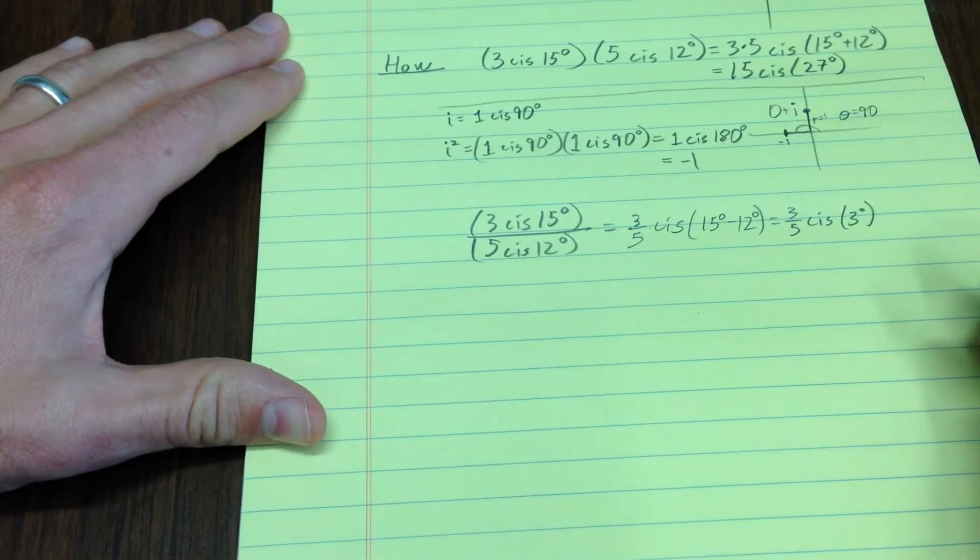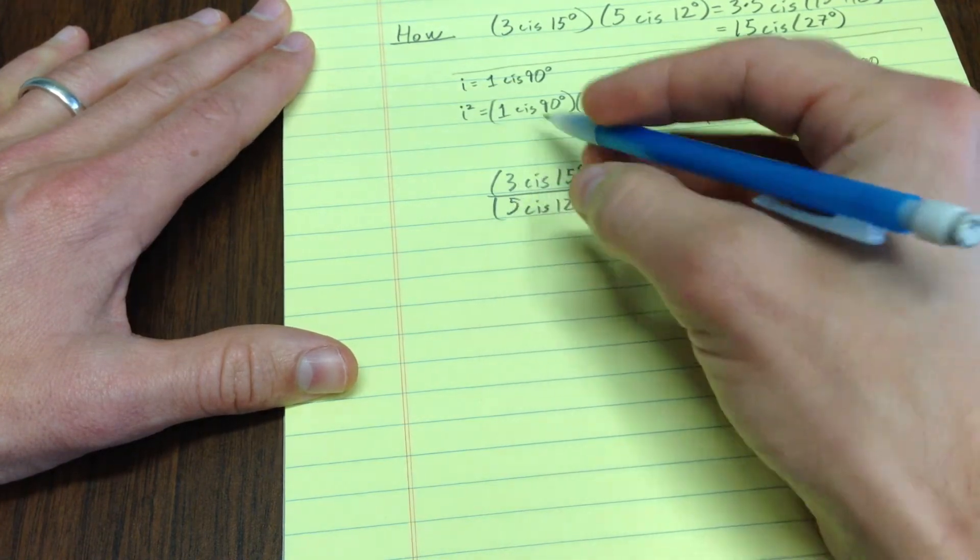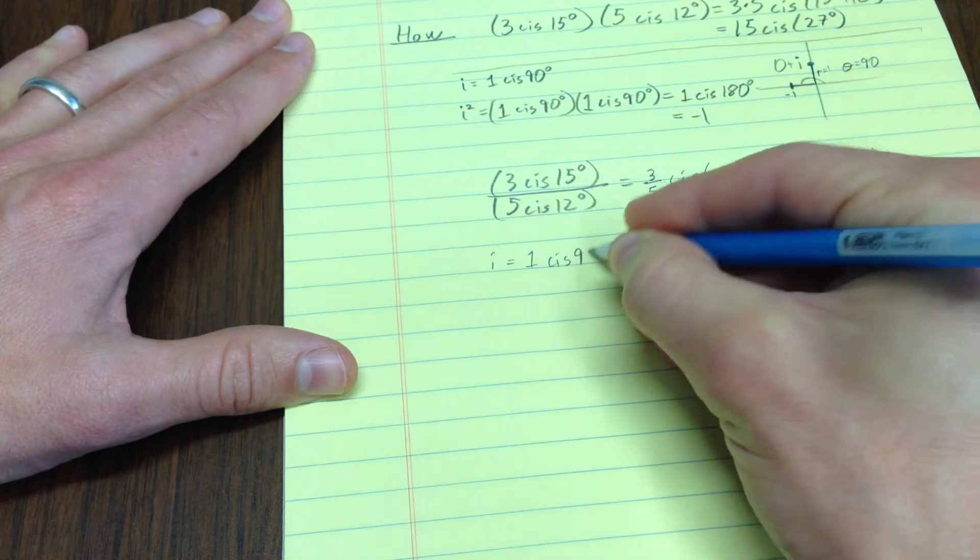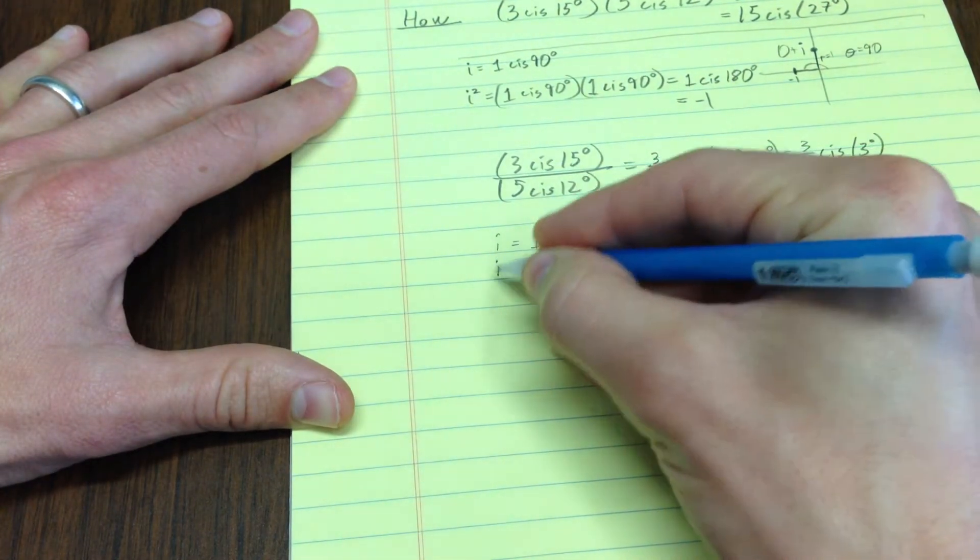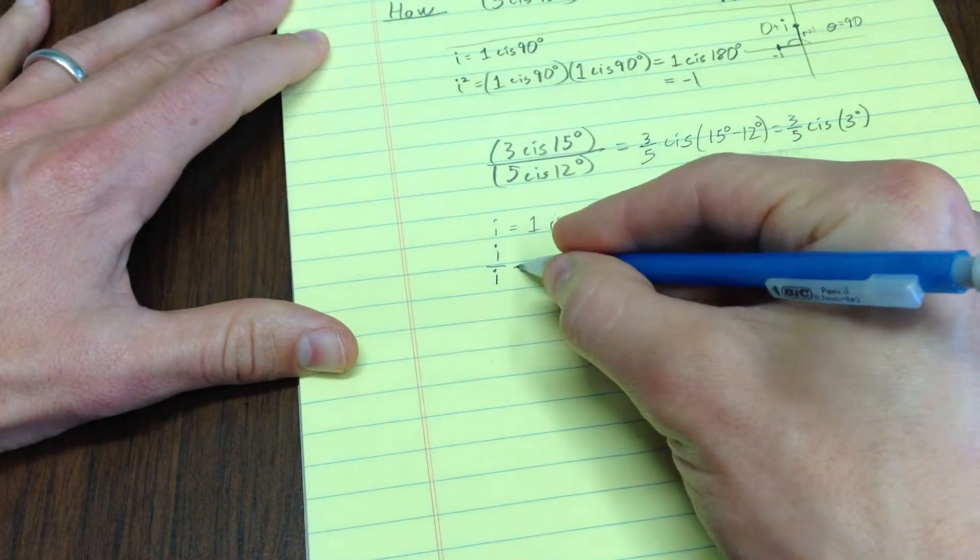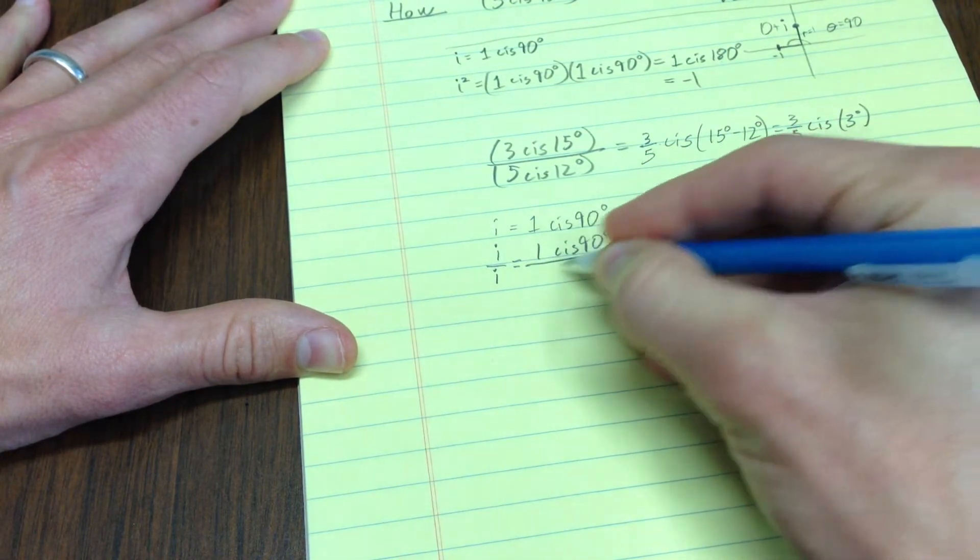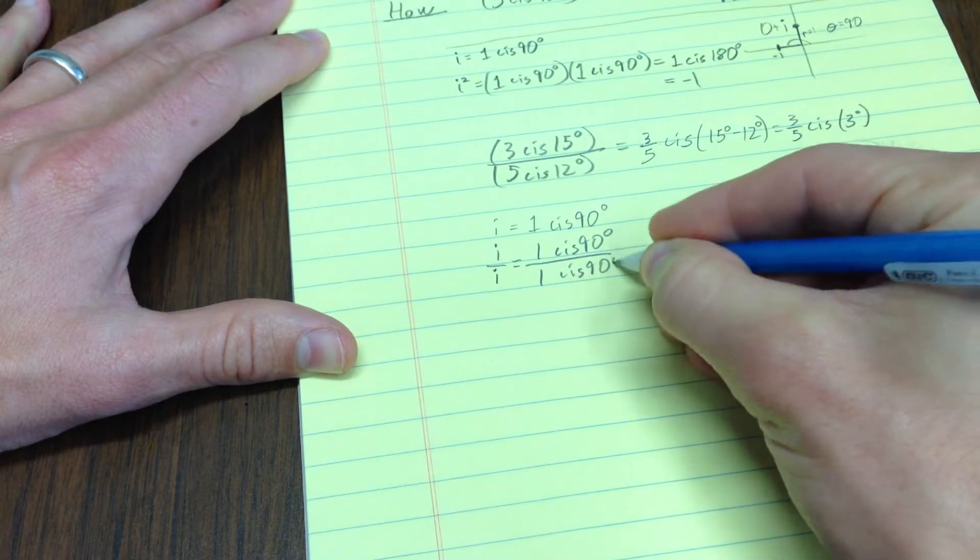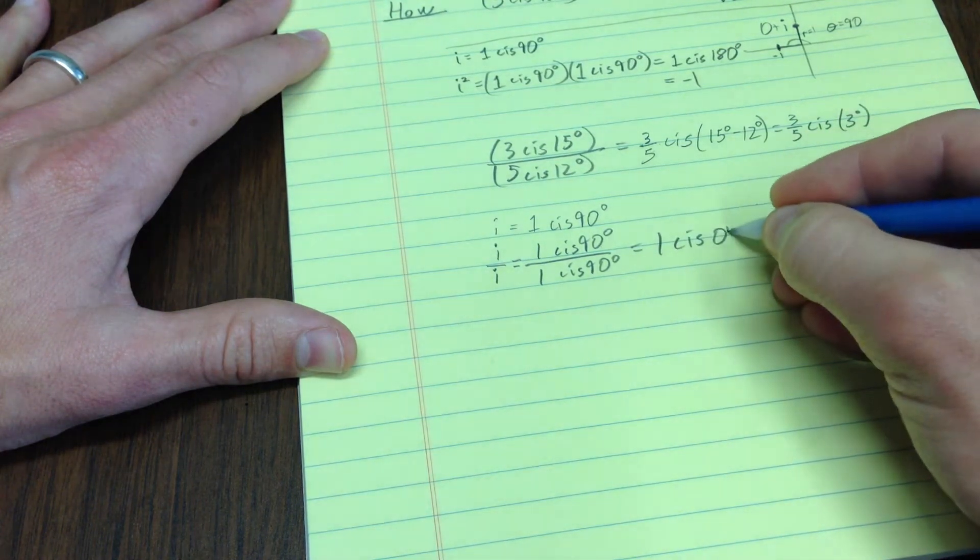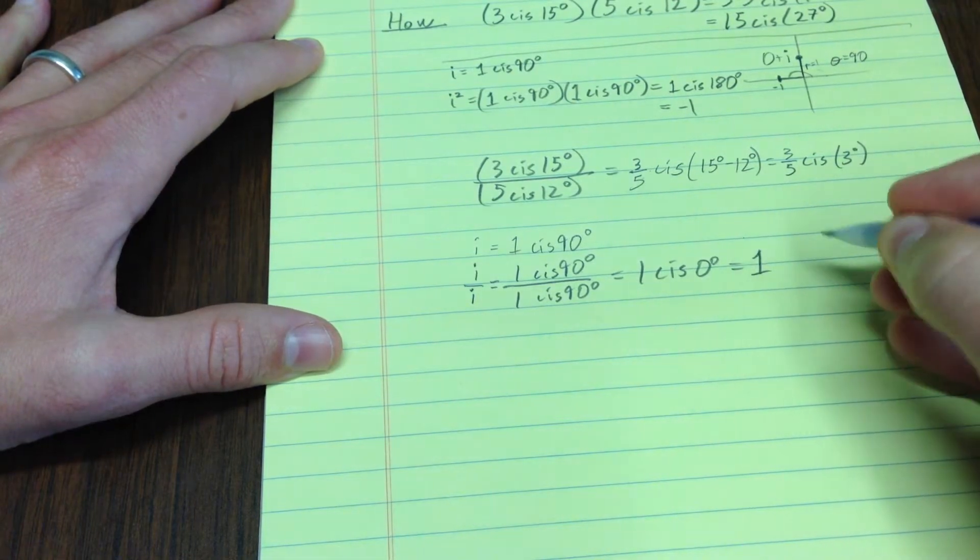Let me just double check it with our silly little example up here. Remember if i equals 1 cis 90 degrees, then i over i, I hope i over i is supposed to be 1, is 1 cis 90 over 1 cis 90, and we would get 1 cis 90 minus 90 is 0 degrees. And of course, if you go out in the 0 degree direction a distance of 1, that is 1.